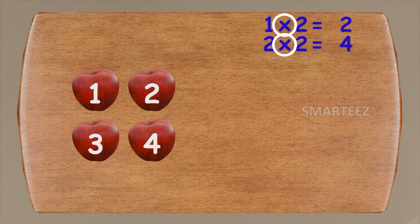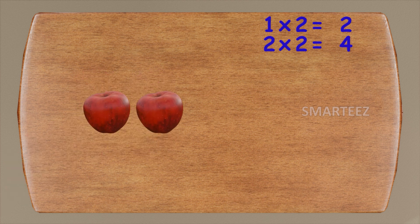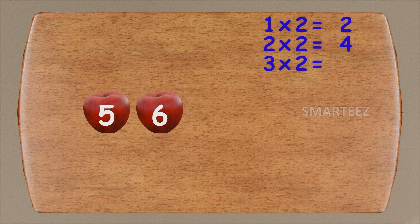We have an x sign for multiplication, and when we see an x we say 'times.' Take a look: one times two is two and two times two is four. Let's keep going — we'll add more apples, two at a time. That's two more apples. We had four already. This will be five and six. Three times two is six.